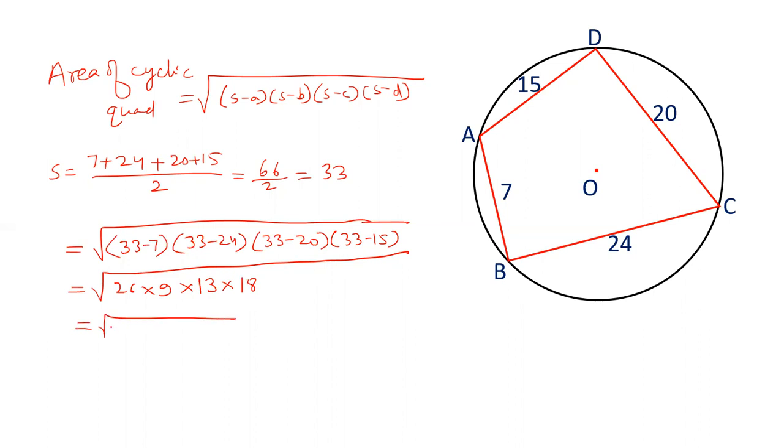We can write 26 as 2 into 13. 9 is 9, 13. 18 can be written as 2 into 9. Now in under root there are two 2s so we can take out one 2, there are two 13s so we can take out 13, and there are two 9s we can take out one 9. Here when you multiply this, two 13s are 26, two 9s are 18 into 13. 234 centimeter square is the area.